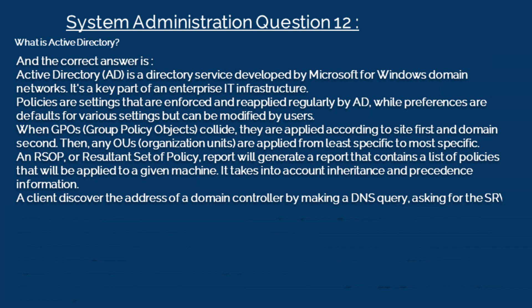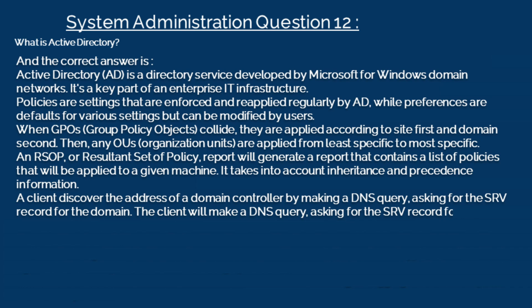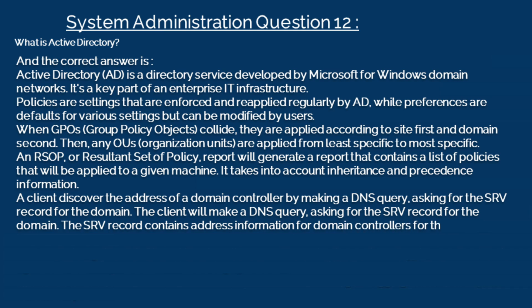A client discovers the address of a domain controller by making a DNS query asking for the SRV record for the domain. The SRV record contains address information for domain controllers for that domain.